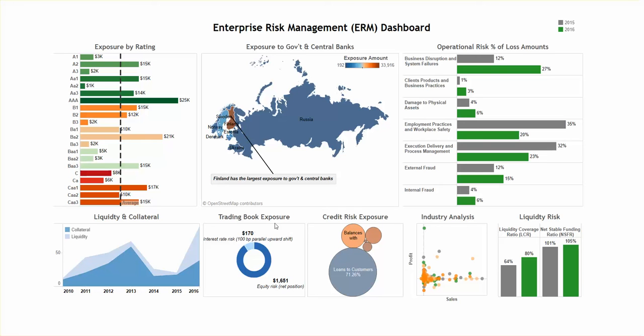Trading Book Exposure is a donut chart that depicts the exposure for interest rate and equity risk. You can see that we have 170 for interest rate and 1,651 for equity risk.